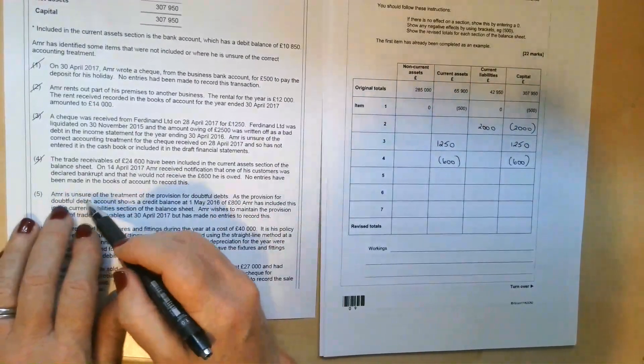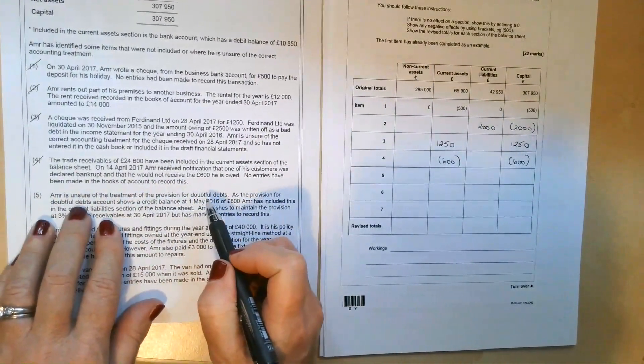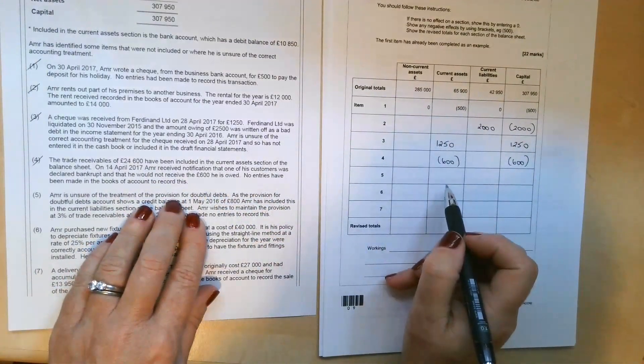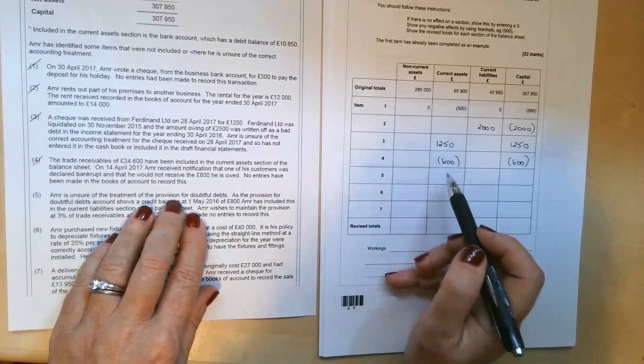So number five, Amir is unsure of the treatment of the provision for doubtful debts. Now, just to remind you, the provision for doubtful debts is a deduction under trade receivables, which are under current assets.